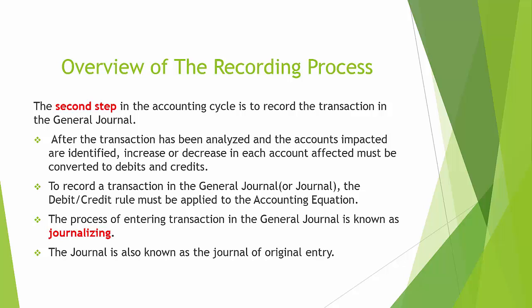The second step in the accounting cycle is to record a transaction in the general journal. After the transaction has been analyzed and the accounts impacted are identified, the increase or decrease in each account affected must be converted to debits and credits. To record a transaction in the general journal, the debit credit rule must be applied to the accounting equation. The process of entering a transaction in the general journal is known as journalizing. The journal is also known as the journal of original entry.